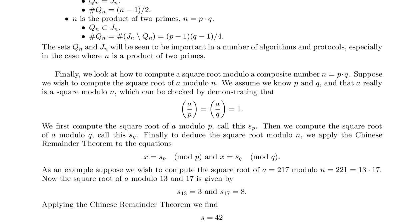We first compute the square root of a modulo p, call this s_p. Then we compute the square root of a modulo q, call this s_q. Finally, to deduce the square root modulo n, we apply the Chinese Remainder Theorem to the equations x equals s_p mod p and x equals s_q mod q.